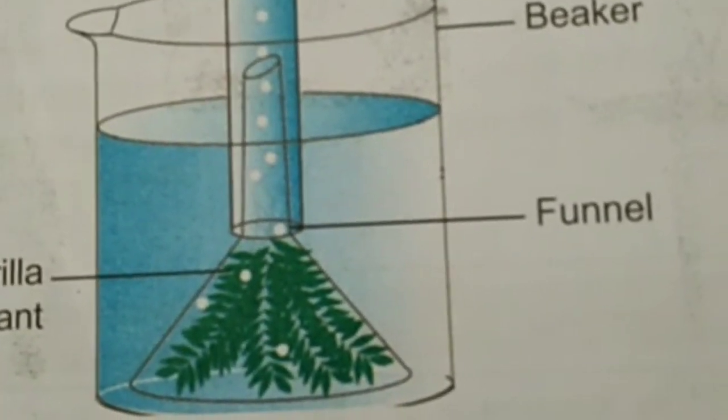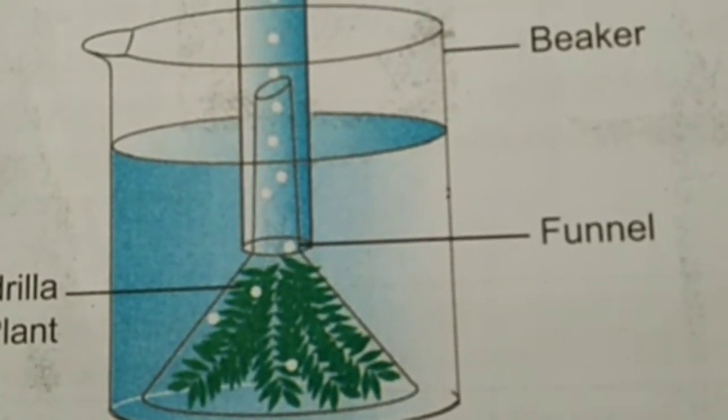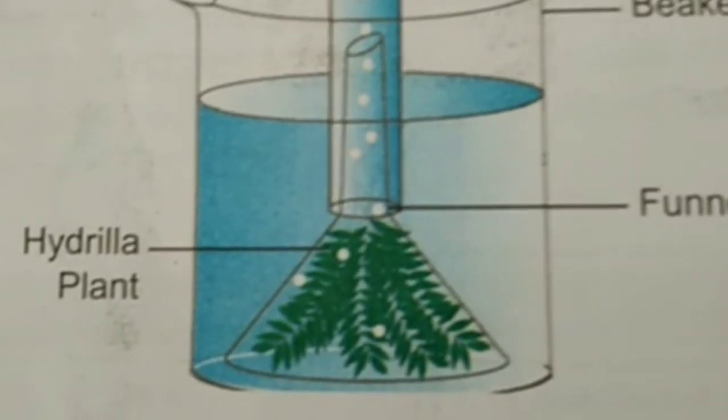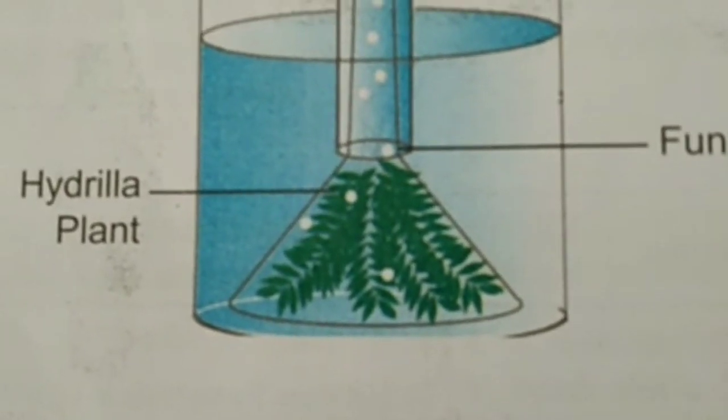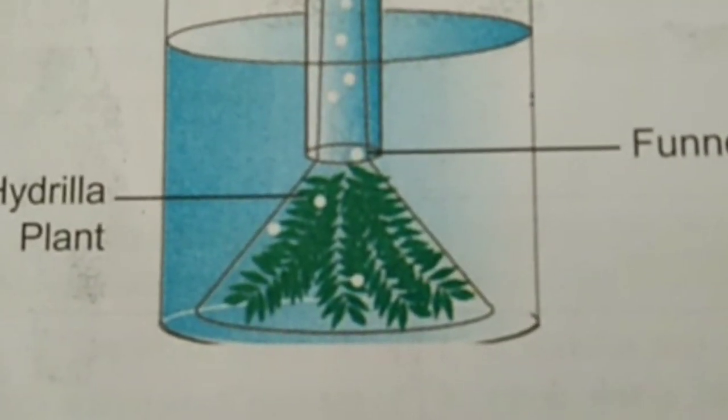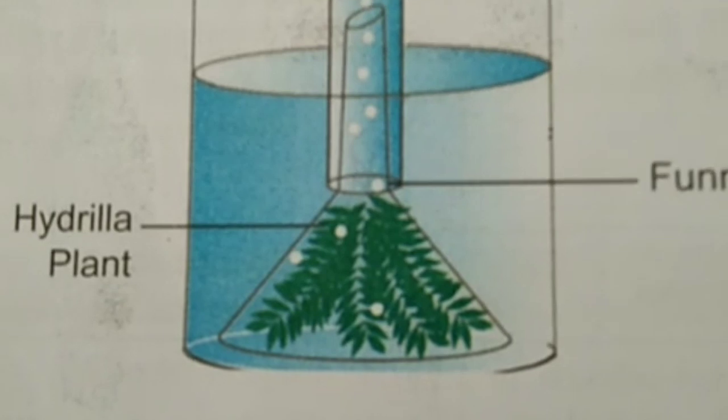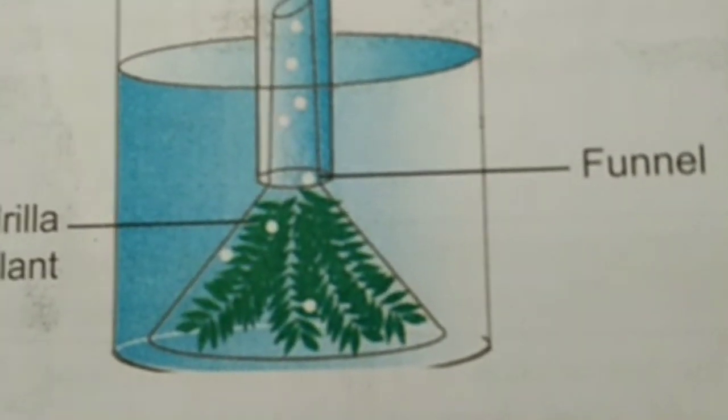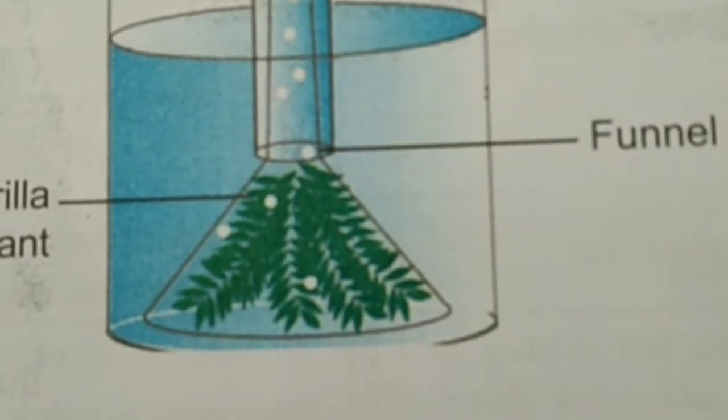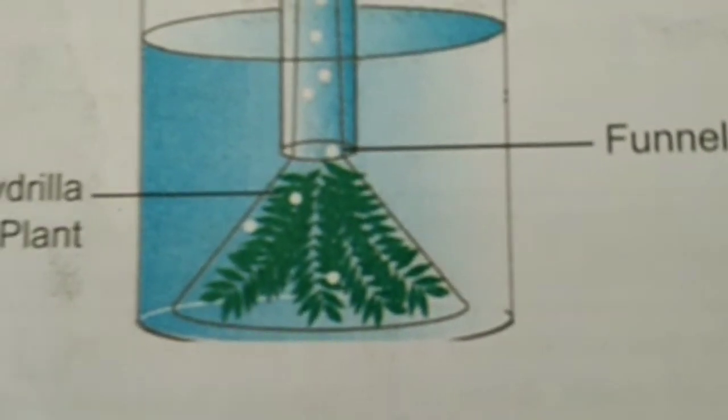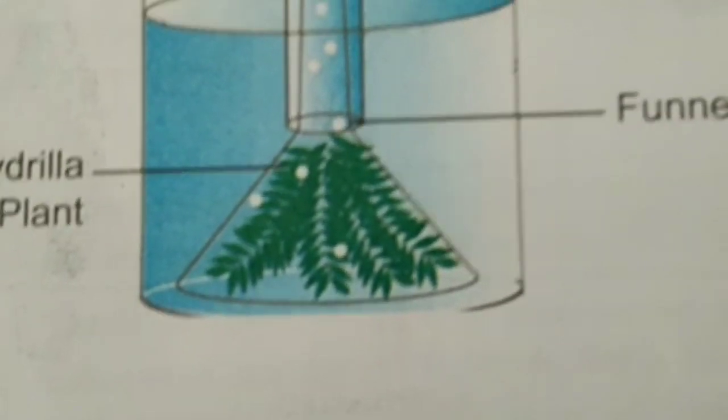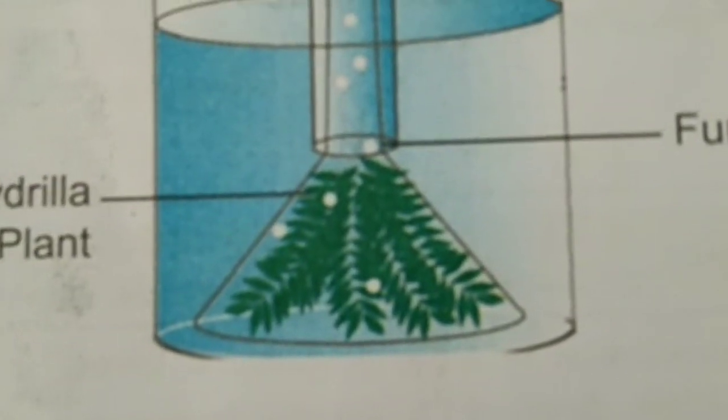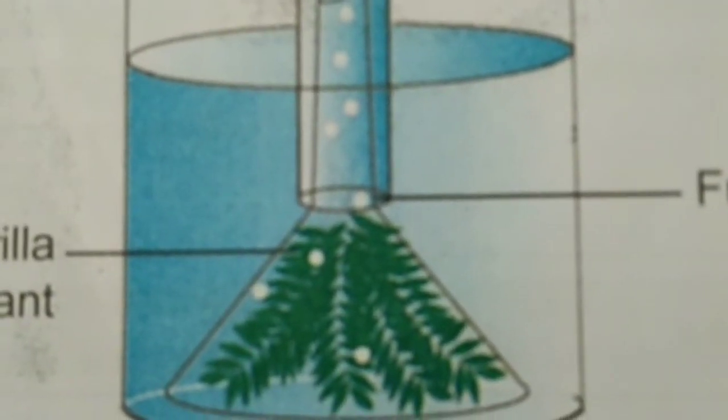Procedure: Fix the Hydrilla plant in a beaker containing pond water. Invert the funnel over the plant. Fill the water and invert the test tube filled with water over the stem of the funnel. Keep the apparatus in sunlight for a few hours.